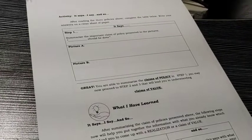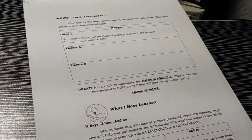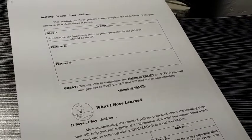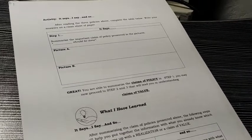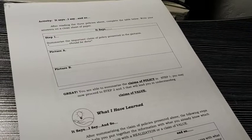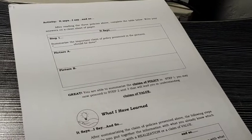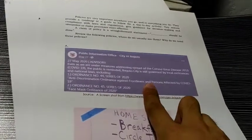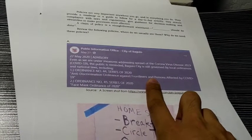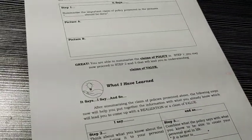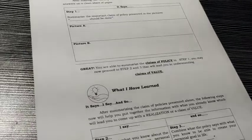We have the activity called 'I Say and So.' After reading the three policies above, complete the table below and write your answers on a clean sheet of paper. Step 1: summarize the important claim of policy presented in the pictures — write the things that should be done, the things people should follow. For picture A: what are the policies, what are the things people should do? Same procedure for picture B.